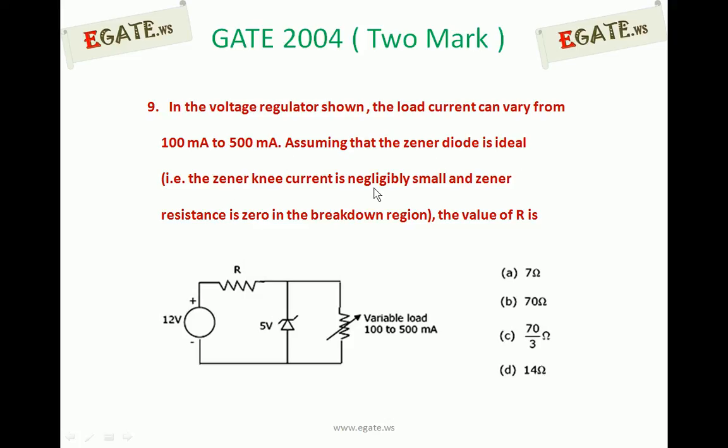Assuming that the Zener diode is ideal, that is, Zener knee current is negligibly small, which is nothing but zero, and Zener resistance is zero in breakdown region. Find the value of R.